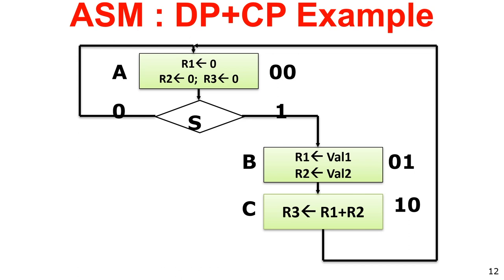This is the data path. The ASM — algorithmic state machine — of the same problem: initially the system will be in state A and all registers R1, R2 and R3 will be cleared. In state A (when start signal is not given), it stays there. Once start signal is given, it will go to states B and C. S is the condition — once start is 1 then only it will execute B and C.